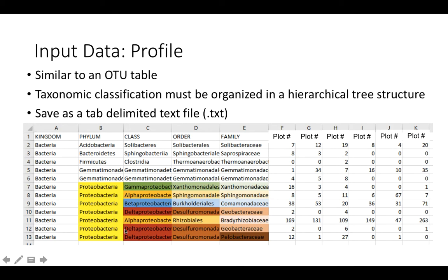Notice within the phylum Proteobacteria, there exists four classes — Alphaproteobacteria, Betaproteobacteria, Gammaproteobacteria, and Deltaproteobacteria — that do not exist within any other phylum within the sample. Notice how Alphaproteobacteria contains two possible orders, Sphingomonadales and Rhizobiales, that do not exist in any other class within the phylum Proteobacteria or any other phylum as well.